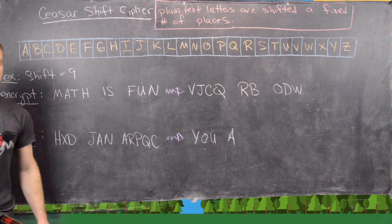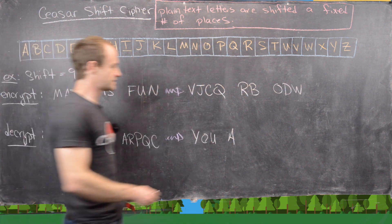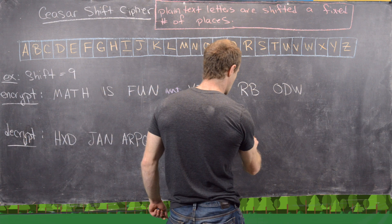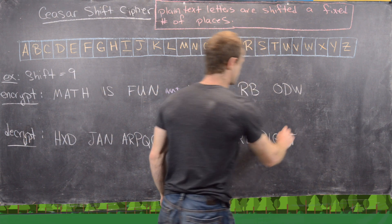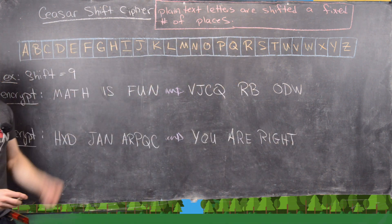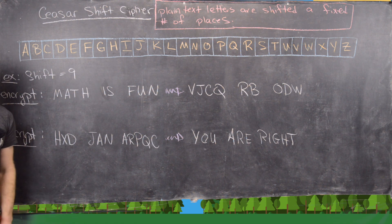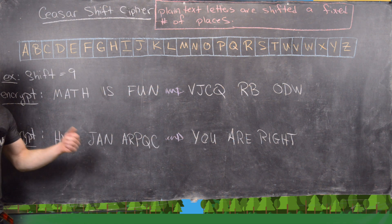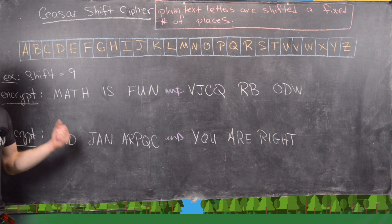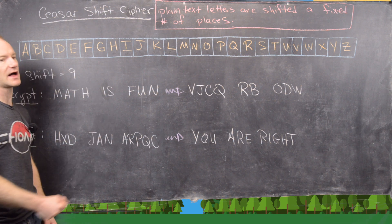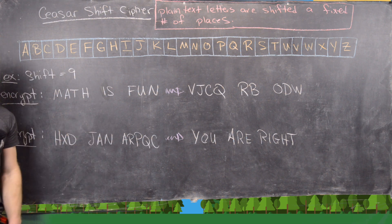Filling in the rest, this decrypts to 'you are right'. This is an example of the Caesar shift cipher, also called an additive cipher. It's the easiest kind of cipher to break — in fact, as long as you know what happens to one letter, you can easily figure out all the others.